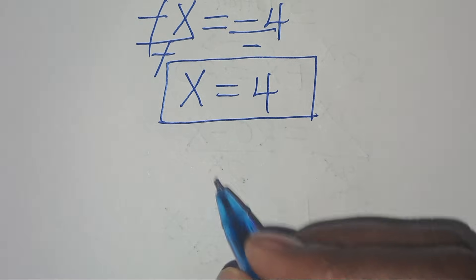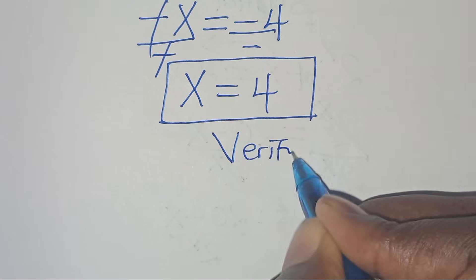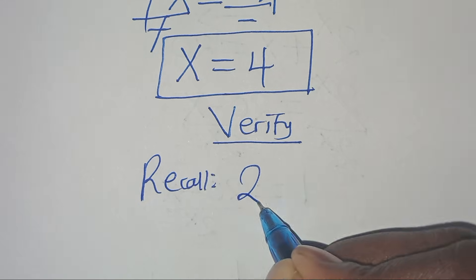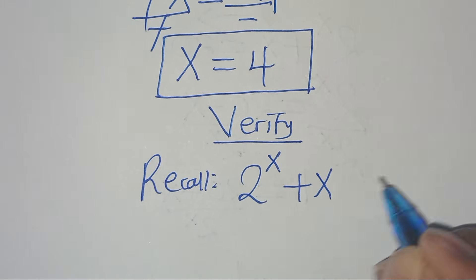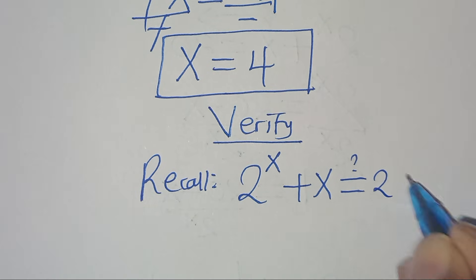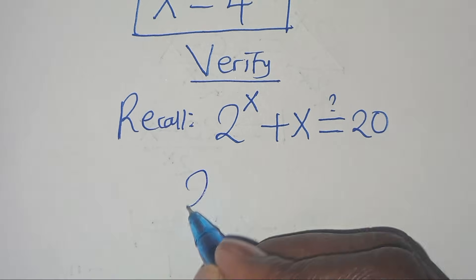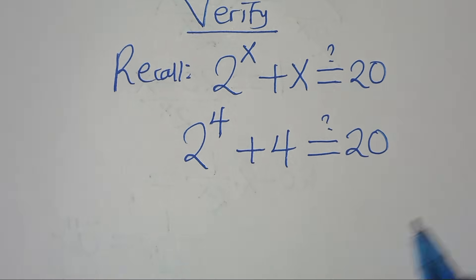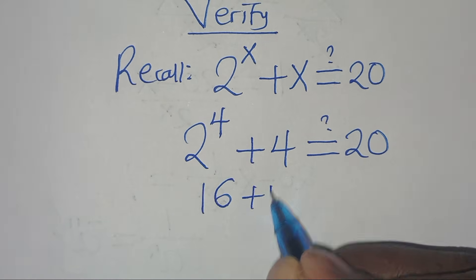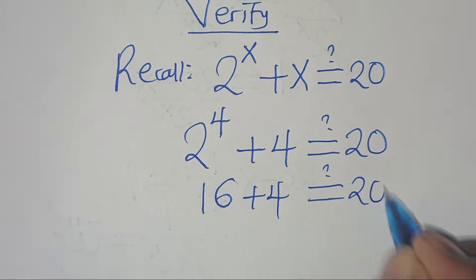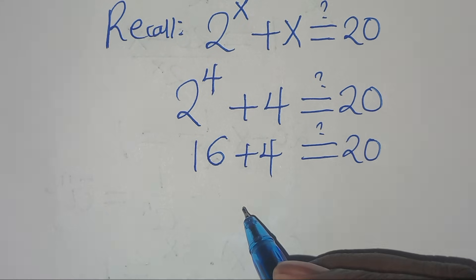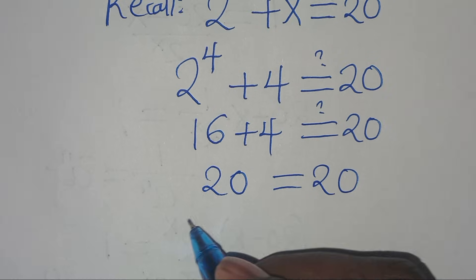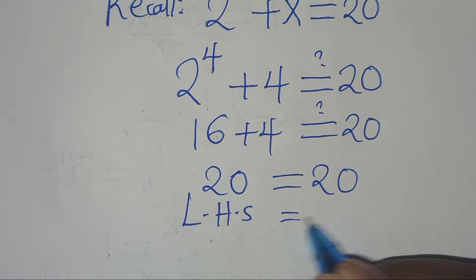The value of x is 4. Let's verify: we recall the equation 2 to the power of x plus x equals 20. Substituting x equals 4, we get 2 to the power of 4 plus 4. 2 to the power of 4 is 16, and 16 plus 4 equals 20, which equals 20. So the left hand side equals the right hand side.